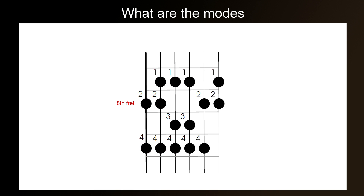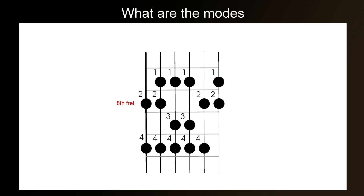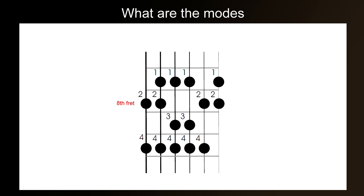We can then move up again one note from E to E, and this is the Phrygian scale. We'd then continue going up in steps through the C major scale. So the next scale would be from F to F, and that would be the Lydian scale. After this, the next scale would be from G to G, and this would be the Mixolydian scale.